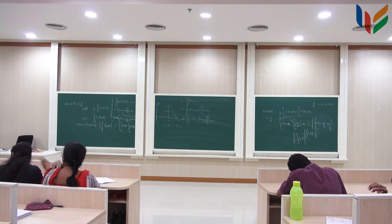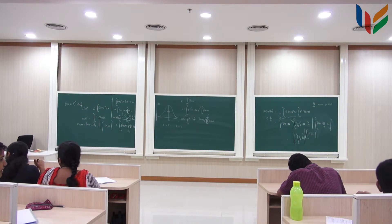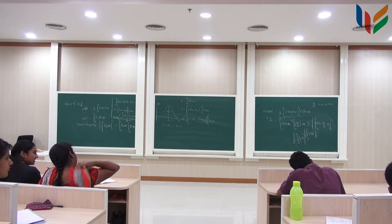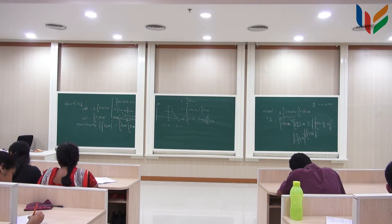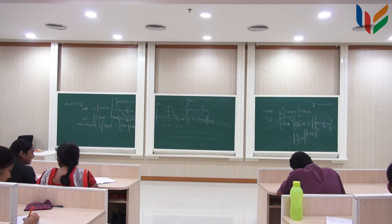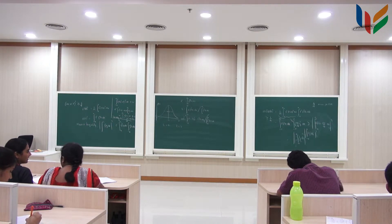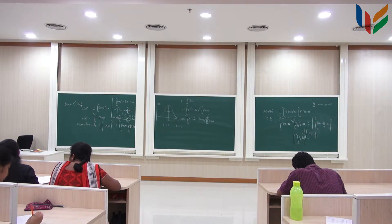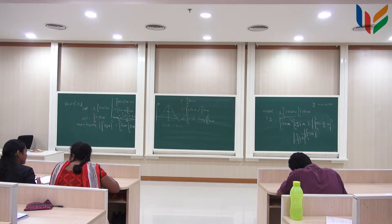Why does this first term die down to 0? Because f has to go to 0 as t tends to infinity, since a function cannot go to infinity at t equal to plus or minus infinity. So it goes to 0, and the first part is 0.